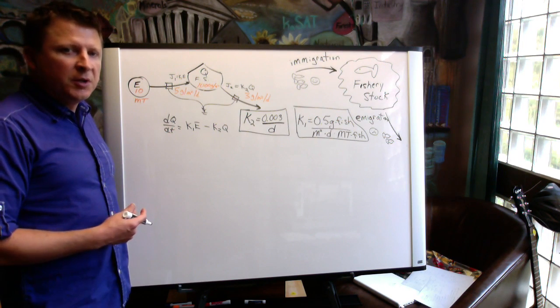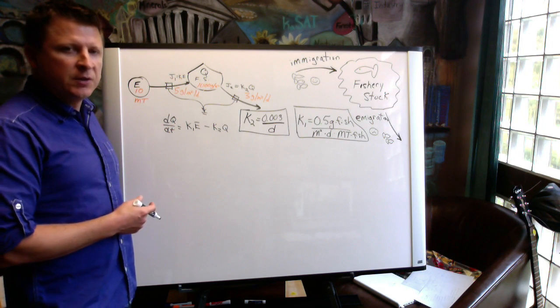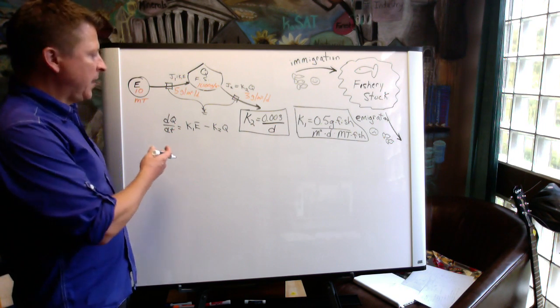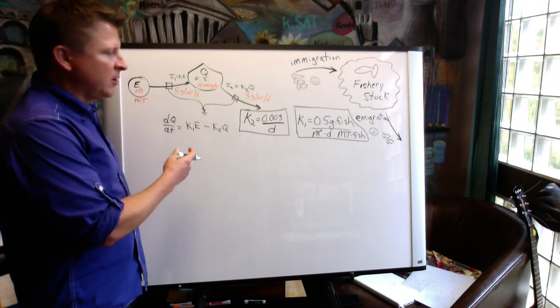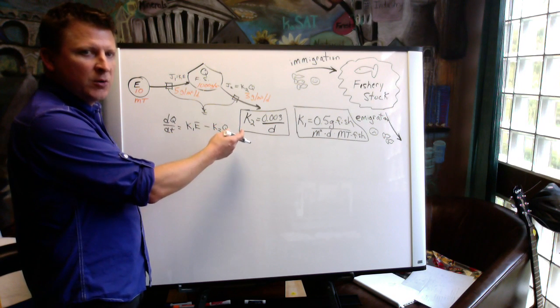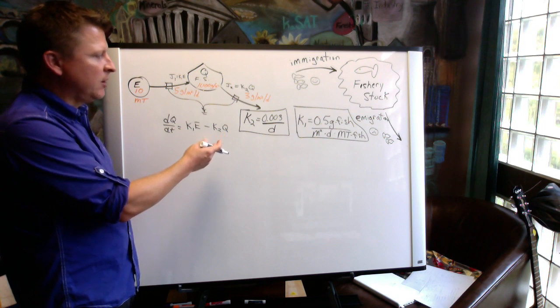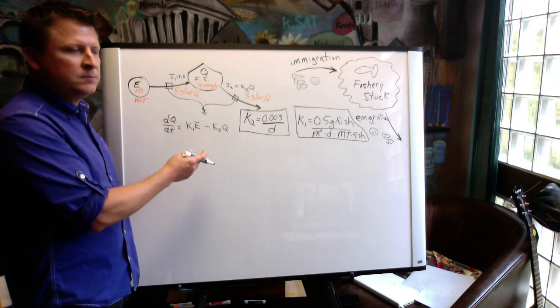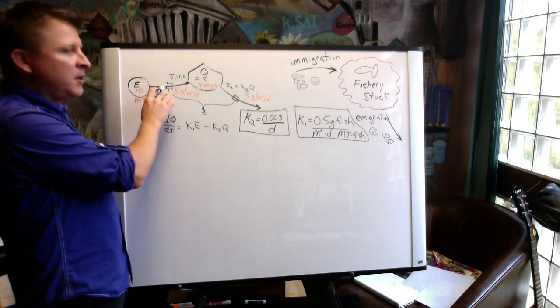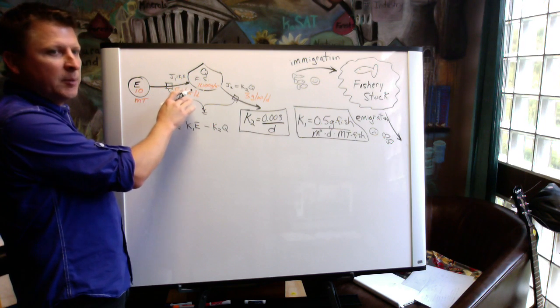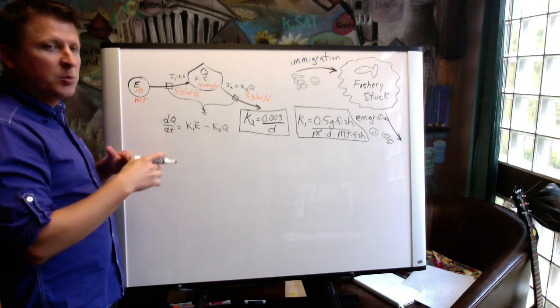Once we have determined our pathway coefficients, K1 and K2 in this example, it's nice to substitute them back into the differential equation to double check our units. Because as we notice, the units for the coefficients are quite odd units. And we'll talk about that more later. But for now, we need to realize that the flows are some material per unit time. In this case, it's the mass per unit area of fishery per unit time.